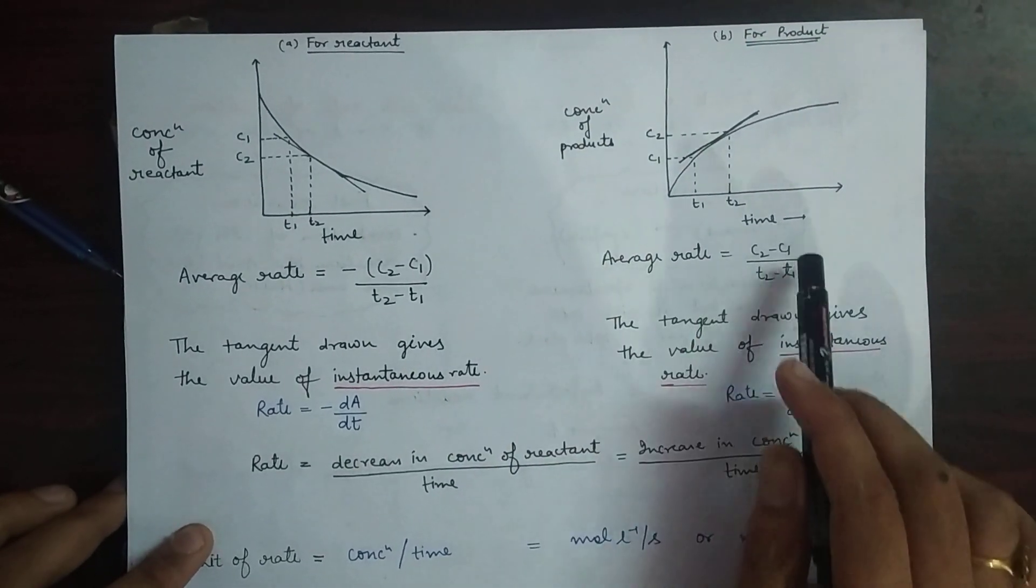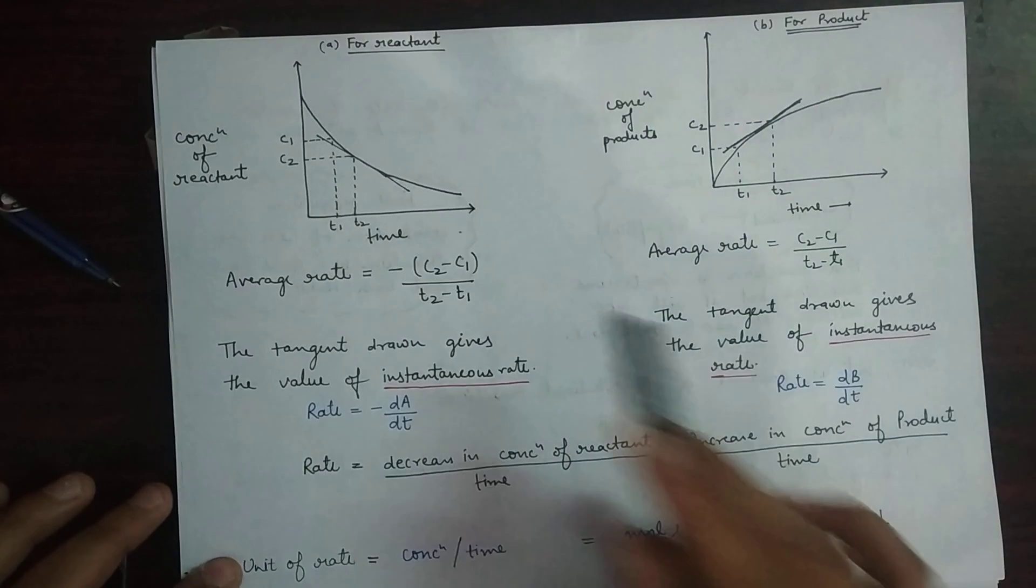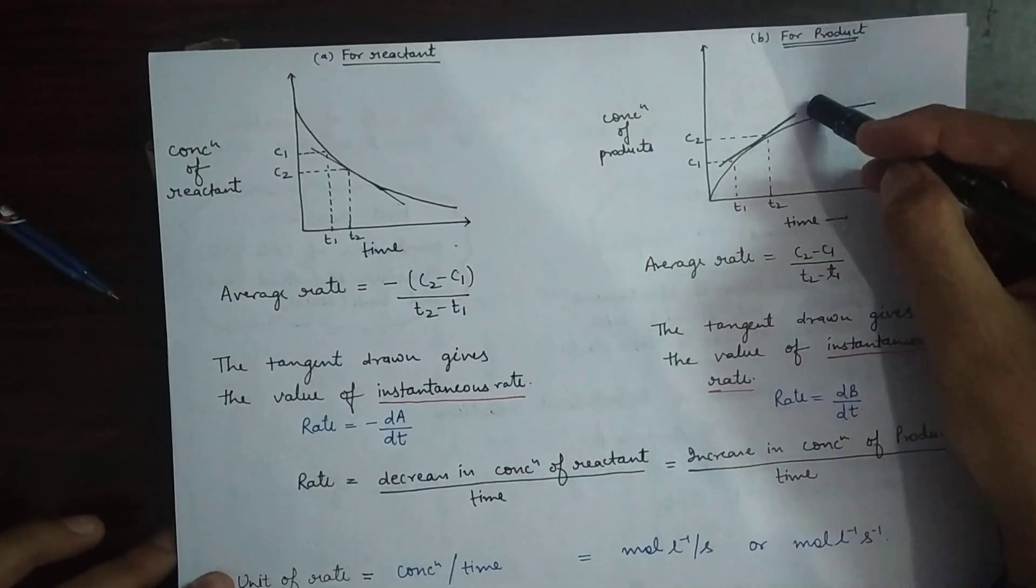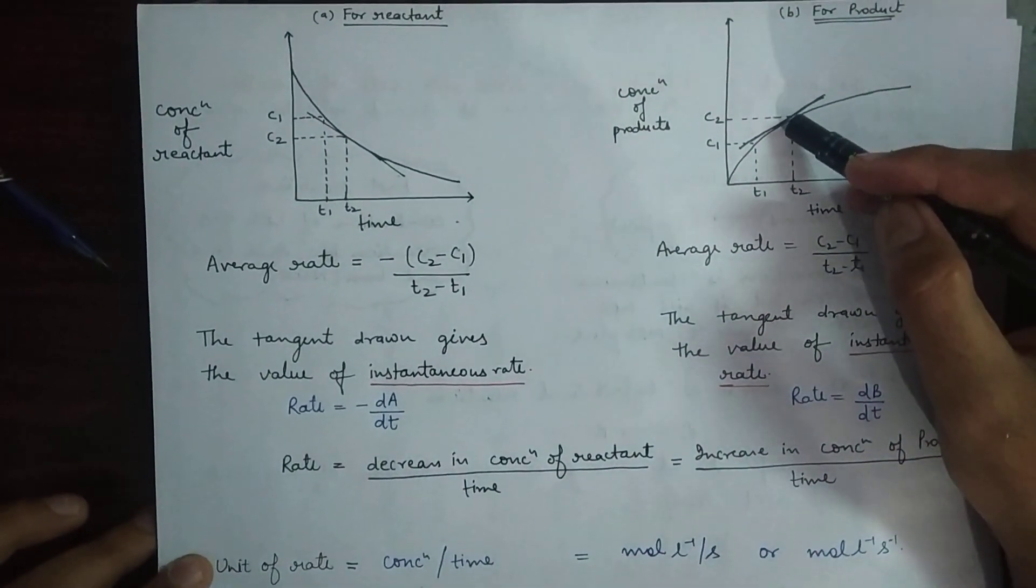Now the average rate will be C2 minus C1 upon T2 minus T1. In both of the graphs what you have seen, I have marked a tangent on the curve. This tangent cuts the curve at a particular point.